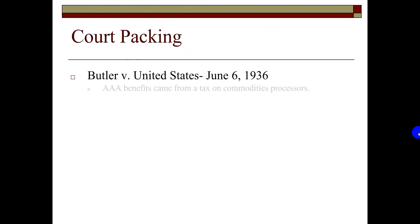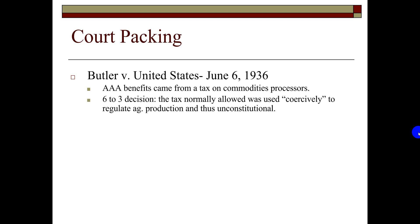Then there was Butler v. United States, June 6, 1936. The AAA drew benefits from a tax on commodity processors. In a 6-3 decision, the Supreme Court found that while the tax was justified under the General Welfare Clause, it was used coercively to regulate agricultural production and was thus unconstitutional. The AAA violated the Tenth Amendment by attempting to use the taxing power to regulate agricultural production — a matter the court said belonged to the states. The production of agricultural commodities was a local activity, not interstate commerce; therefore Congress could not use its taxing powers this way.